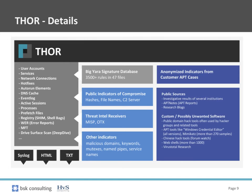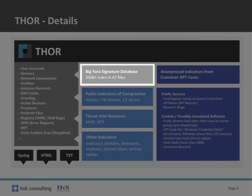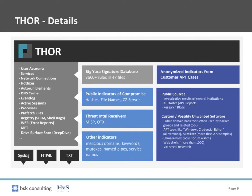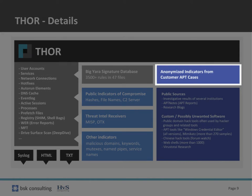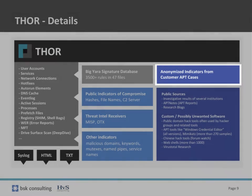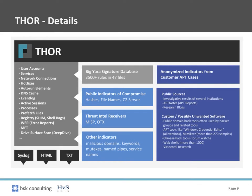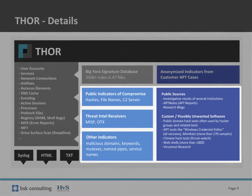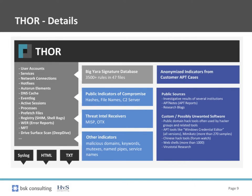Thor contains many different modules to analyze elements like system services, network connections, the Windows event log, processes, registry caches and so on. The main signature database contains a steadily increasing number of YARA rules, which is a flexible and extensible open signature format. We use our own indicators of compromise in anonymized form, include indicators from public sources and provide tools to include indicators from private threat feeds like MISP or OTX.